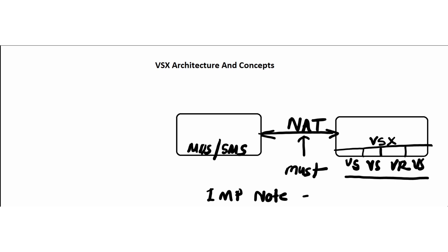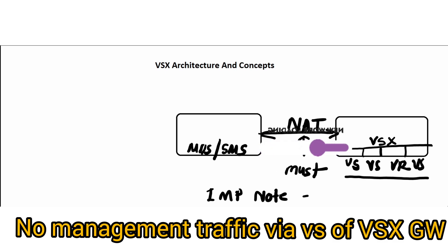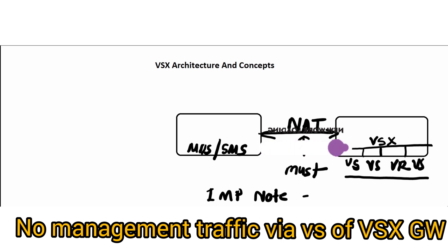NAT — network address translation — handles public-to-private and private-to-public IP conversion based on the various NAT types available. Secondly, it is not supported to manage a VSX gateway when management traffic is protected by or travels through a virtual system on the same VSX gateway. For example, if a virtual system configured on the VSX gateway sits in the path of communication between the VSX gateway and the SMS, that configuration is not supported for management communication traffic.